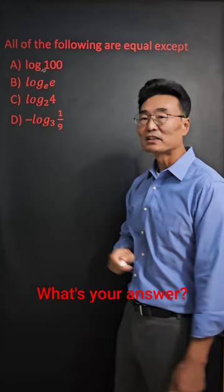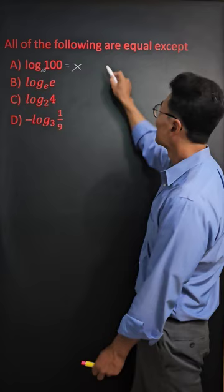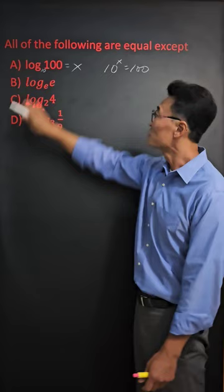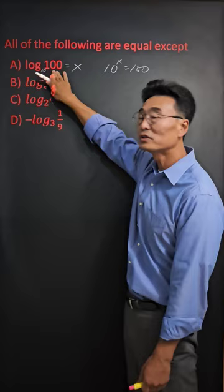And if I set this log equal x, then this is the same thing as 10 to the x power equals 100. Notice the base goes here, the x on the right side of the equal sign is going to be the exponent, and 100, the argument, goes on the right side of the equation. Then if we solve for x,